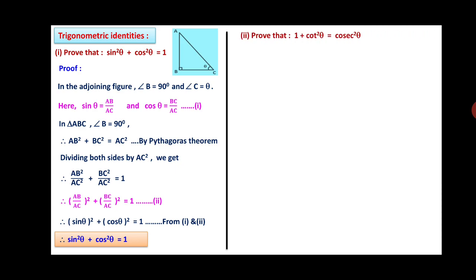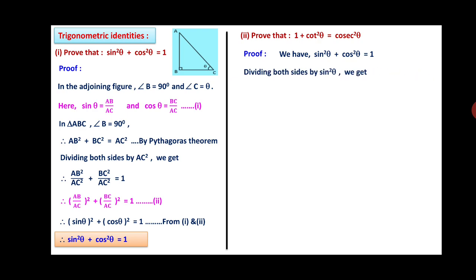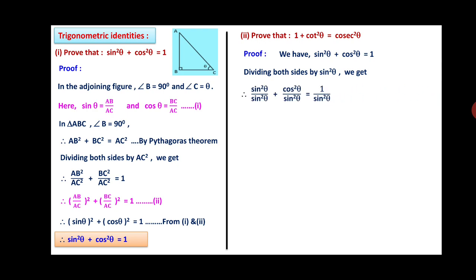Prove that 1 + cot²θ = cosec²θ. Starting from sin²θ + cos²θ = 1, divide both sides by sin²θ. We get: sin²θ/sin²θ + cos²θ/sin²θ = 1/sin²θ. This simplifies to: 1 + cot²θ = cosec²θ, since cos/sin = cot and 1/sin = cosec. Hence proved.